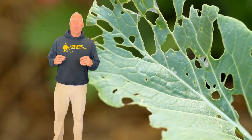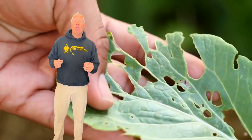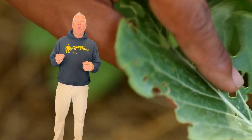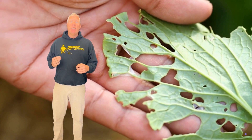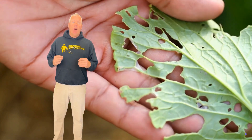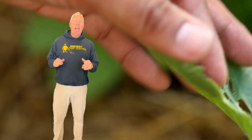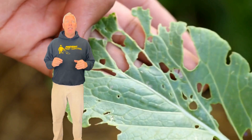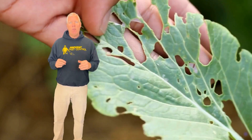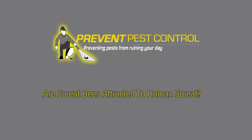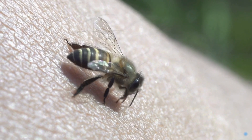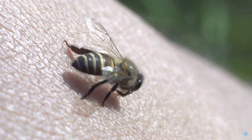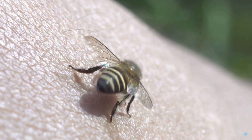How do leaf cutter bees construct their nests? Leaf cutter bees are fascinating builders. They cut small circular pieces from leaves and use them to line their nests, which they often build in pre-existing cavities. This leaf lining provides a protective environment for their larvae to grow.